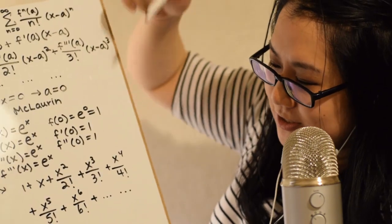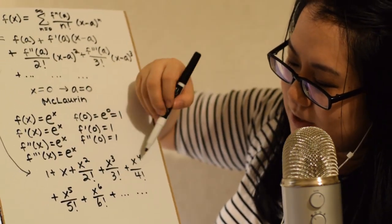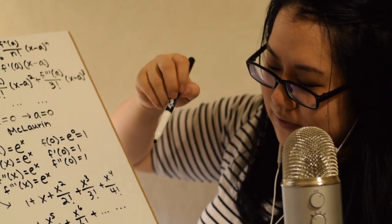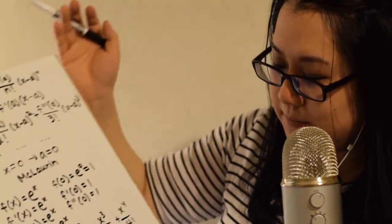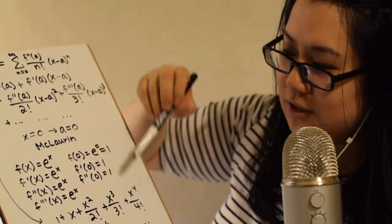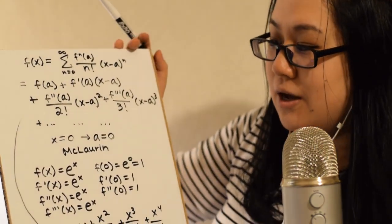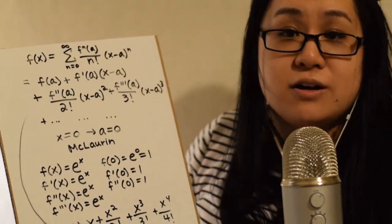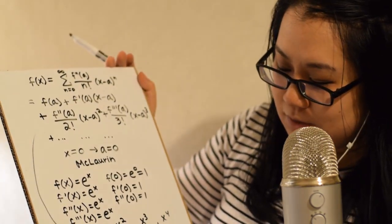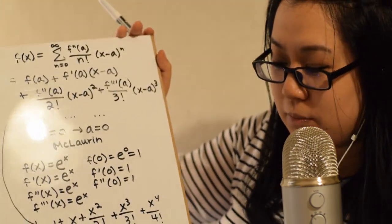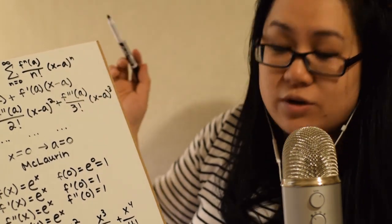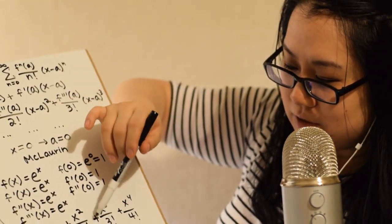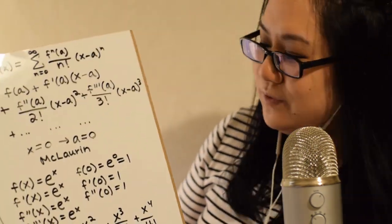Continuing the pattern: plus x to the fourth over four factorial, plus x to the fifth over five factorial, plus x to the sixth over six factorial, and so on. You're just increasing the power of x by one each time, and increasing the factorial — two factorial, three factorial, four factorial up to infinity. This is breaking down f of x equals e to the x about x equals zero and approximating it with this Maclaurin series polynomial.